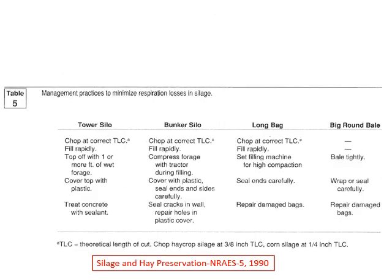This list from the Hay Silage and Hay Preservation book covers practices associated with different silo structures: tower silo, bunker silo, long bag, and round bale. The three silage processes are largely the same, except a tower silo is going to be self-packing. A bunker silo you'll compress with a tractor. A long bag you'll compress with the filling apparatus that packs the material as it goes in, hopefully getting a good pack.